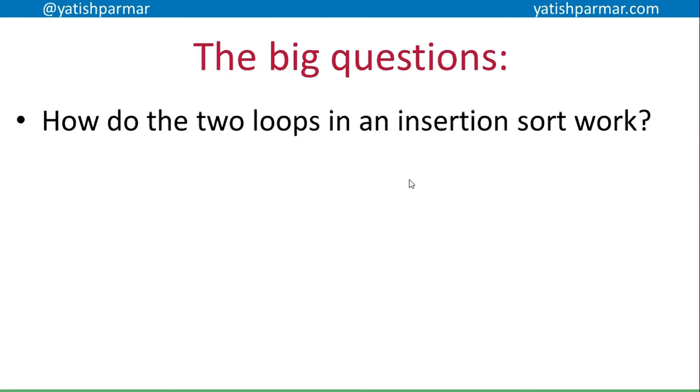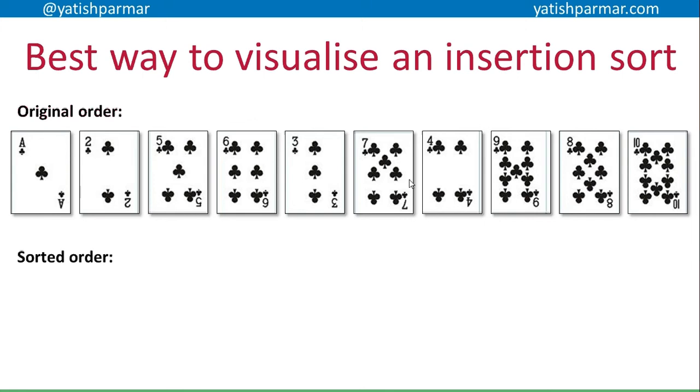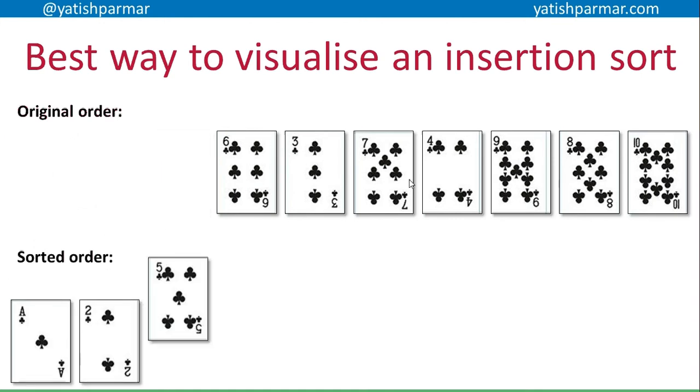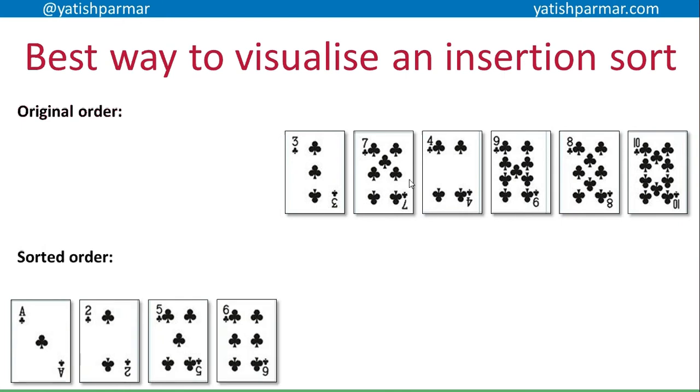The best way to visualize an insertion sort is to think about a deck of cards, because most of us have played cards at some point in our lives. Here I have the top original set of cards and I want to put them in some form of sorted order. So I start off with my first item, which is the ace, and I just copy that over to my new data file.